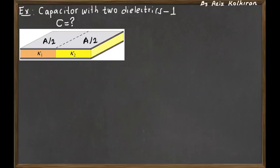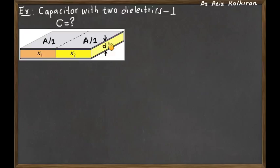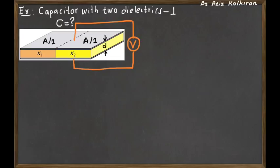Suppose the total area of one of the plates is A. Then half of the area has K1 dielectric between the plates, and the other half has the K2 dielectric. Suppose the thickness of each dielectric is D, and we apply a potential difference between the two plates.